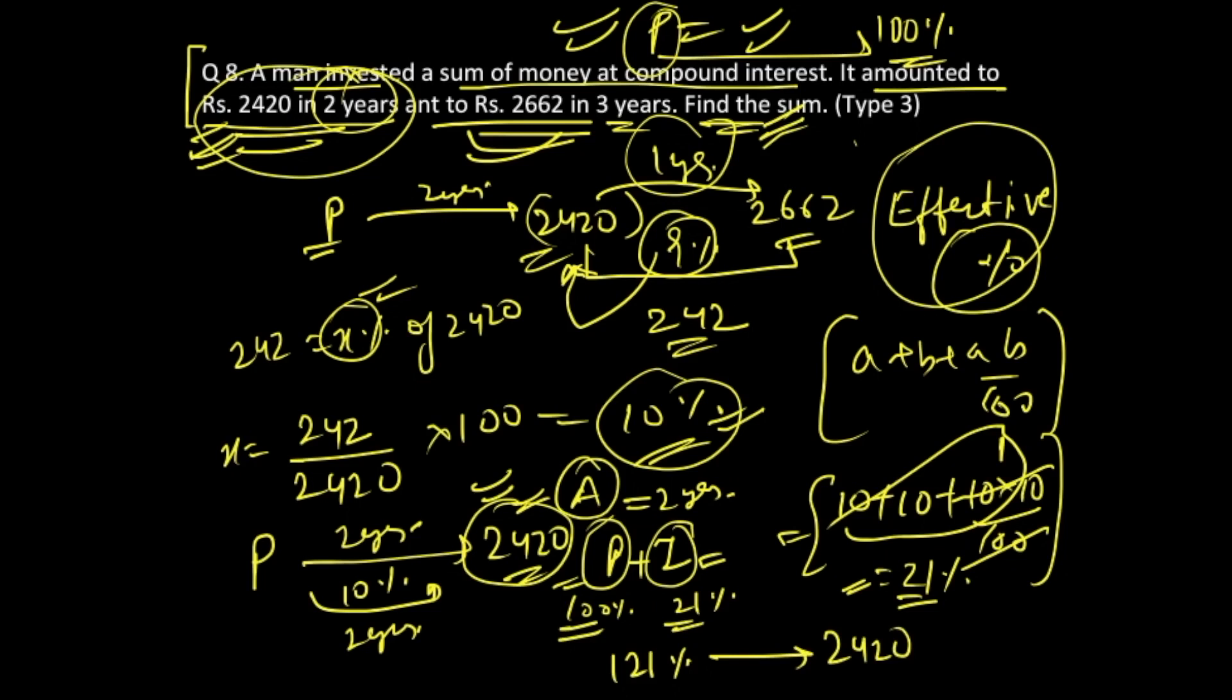So if 121 percent corresponds to 2420, 100 percent would correspond to how much? This is the final equation that you have to solve to get the answer.